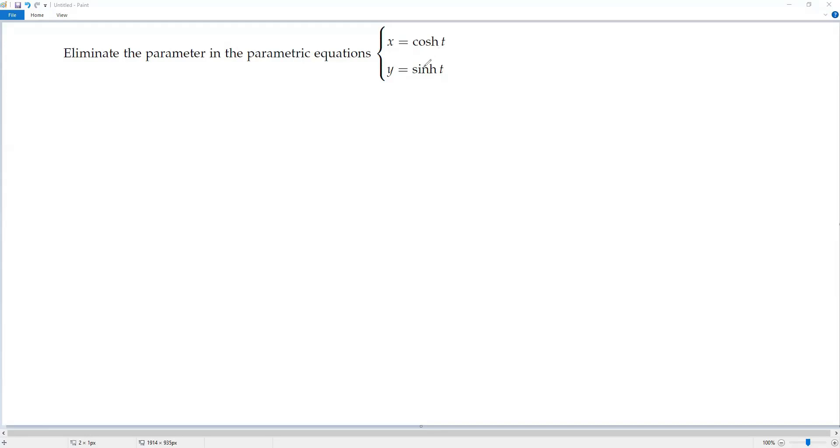We have one identity in hyperbolic functions: cosine h square t minus sine h square t equals 1. This cosine h square t can be written as cosine ht the whole square minus sine ht the whole square equals 1.